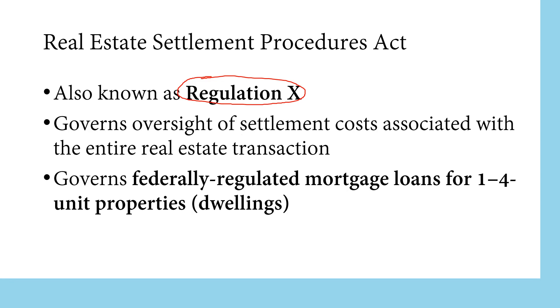Here you want to highlight settlement costs. RESPA is all about settlement costs. It governs federally regulated mortgage loans for 1 to 4 unit properties, which are also known as dwellings.